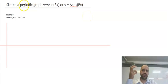Now we're going to be sketching a periodic graph if we know the equation. So if you know y equals 2 cos 3x, you should be able to sketch it with some pretty decent accuracy. Let's jump into it.